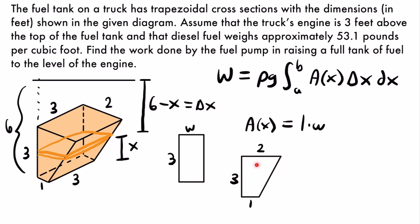We can break this trapezoid into two smaller shapes: a rectangle and a triangle. The rectangle has a width of one, so the triangle on top also has a base of one — since the full top measures two and the rectangle accounts for one, the triangle's base is one. So the width of our cross-sections is always going to be at least one, and it starts at one and only gets bigger. We know the width will be one plus some additional width determined by that triangle.